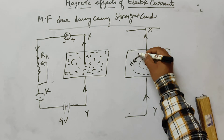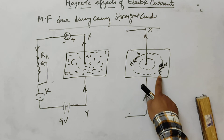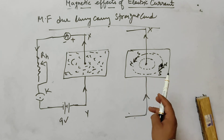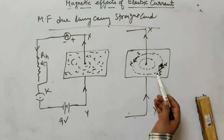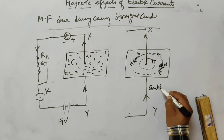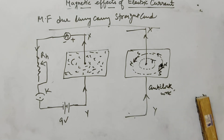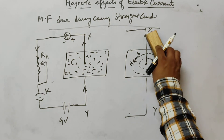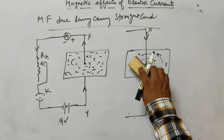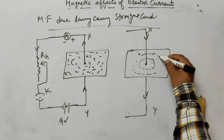The iron filings show the field lines. We also place a compass to find the direction of the magnetic field lines. The compass shows north-south direction, revealing the field lines are in an anticlockwise direction. If we reverse the current direction, the field lines become clockwise instead of anticlockwise.